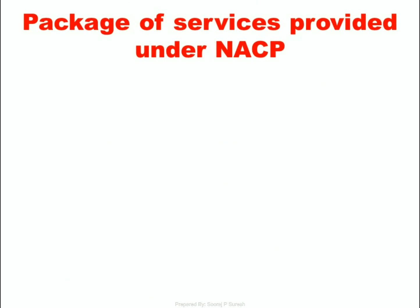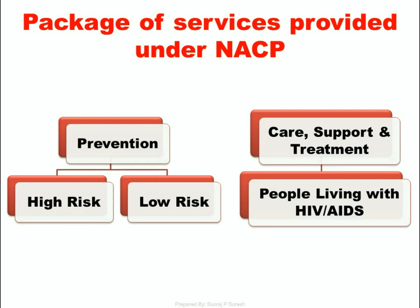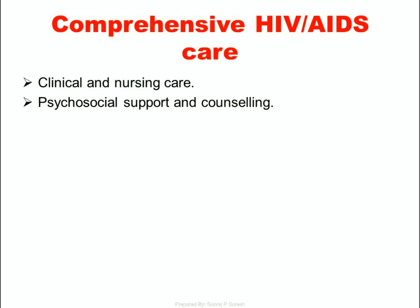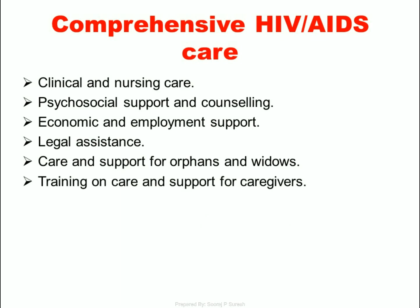The National AIDS Control Program (NACP) provides a prevention package for both high-risk and low-risk people, and also ensures care, support, and treatment for people living with HIV/AIDS. Comprehensive HIV/AIDS care includes clinical and nursing care, psychosocial support and counseling, economic and employment support, legal assistance, care and support for orphans and widows, and training on care and support for caregivers.